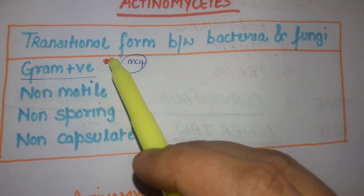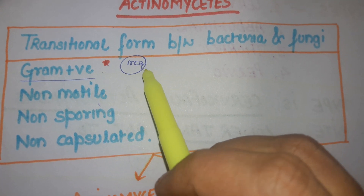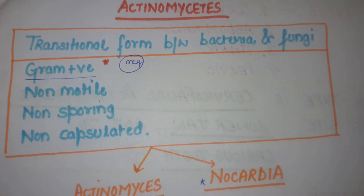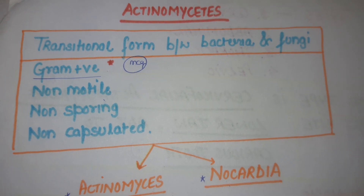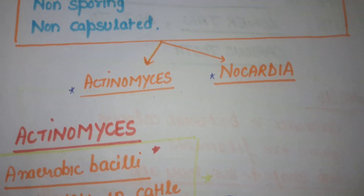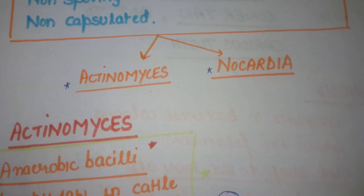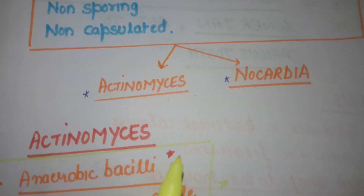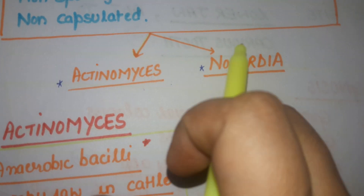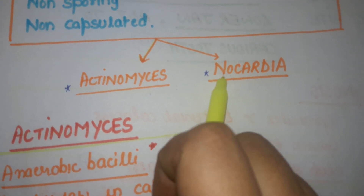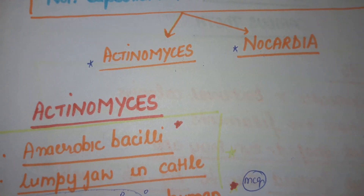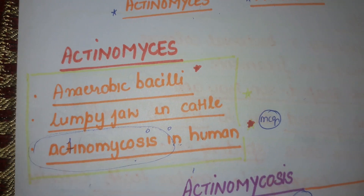Mark this point — gram-positive organisms — and draw this table as it is. Now Ectanomycetes involves Ectanomyces and Nocardia, and today I'll be discussing Ectanomyces in detail. Nocardia will be discussed in another video.